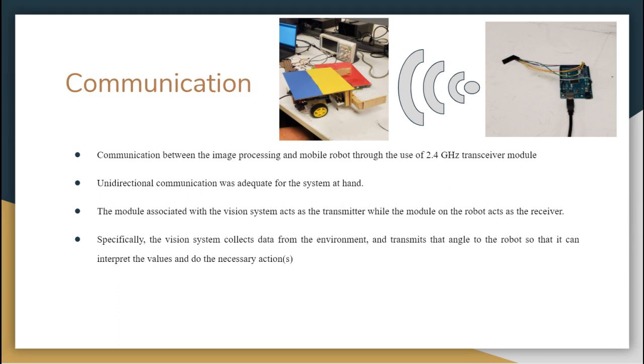Moving into transceiver communications, the communication between the vision system and the robot is established using a transceiver module operating on a frequency of 2.4 GHz. The transceivers may act as both transmitters and receivers simultaneously to allow for bidirectional communication. Unidirectional communication was adequate for the system at hand. The modules associated with the vision systems act as the transmitter while the module on the robot acts as the receiver. Specifically, the vision system collects data from the environment, calculates the angle between the robot's direction and the desired target, and then transmits that angle to the robot.